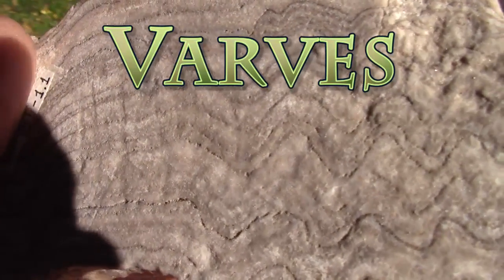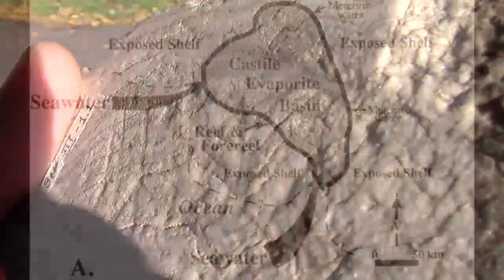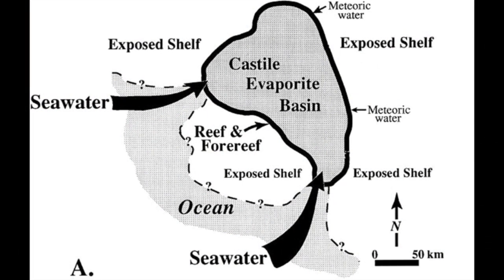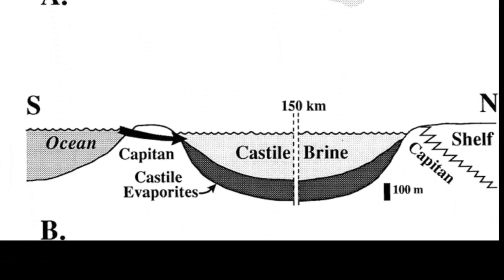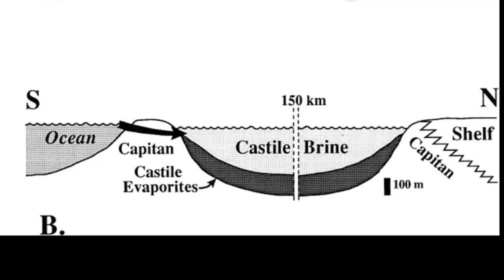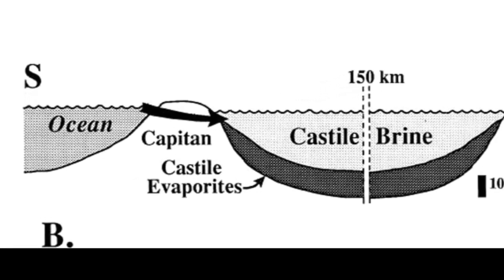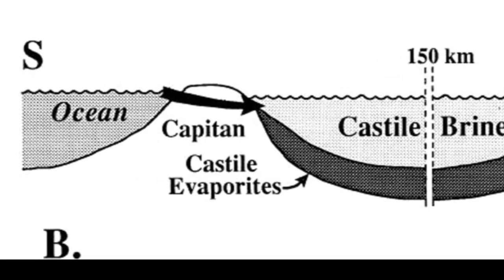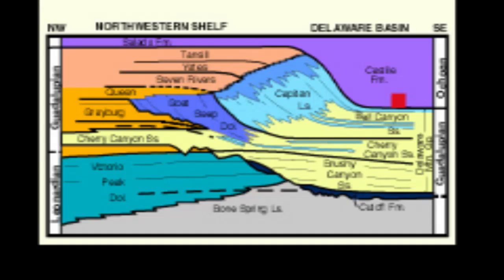The Castile Formation's environment 250 million years ago was actually a lake formed near the shore of an ancient ocean, but dammed by an extinct coral reef. When the conditions were arid, this closed basin evaporated and deposited evaporites of mostly halite and anhydrite, but during more humid conditions, seawater could leak through the reef, replenishing the lake with nutrients, so that plankton grew and died and formed carbonates.